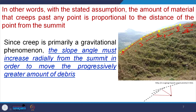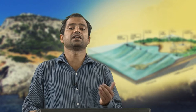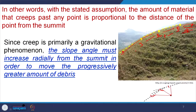Since creep is primarily a gravitational phenomenon, the slope angle must increase radially from the summit in order to move progressively greater amounts of debris. More angle means more debris falls down. Further from the summit, more material moves downward through creep; the greater the slope angle, the more debris that will be removed.